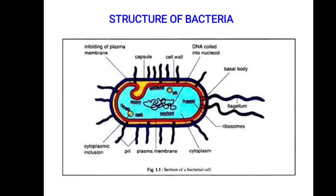The figure shows the structure of bacteria. Inside the cell, it contains a nucleoid, DNA-coiled nucleoid, ribosomes, cytoplasm, plasma membrane, and cytoplasmic inclusions. Outside the cell wall, it has a capsule, cell wall, flagellum, pili, and basal bodies.